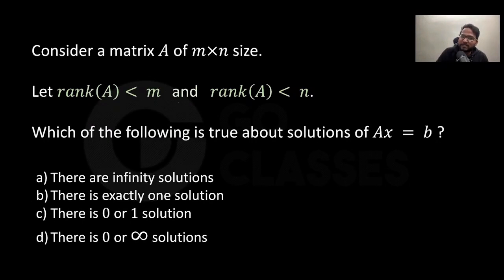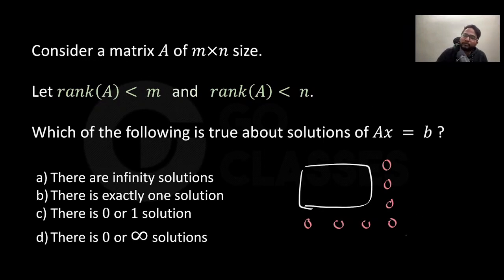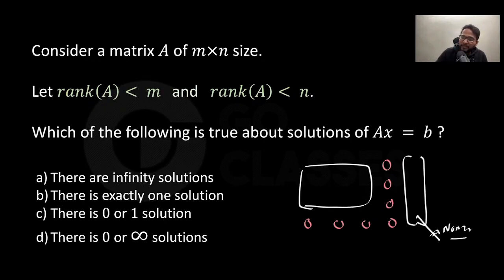If rank of A is less than both m and n, there are zero rows because not every row has a pivot, and there are also zero columns because not every column has a pivot. When you bring b, you might bring a non-zero entry corresponding to a zero row, giving no solution. Or if b is zero there, you get infinitely many solutions. So it's either no solution or infinitely many solutions.